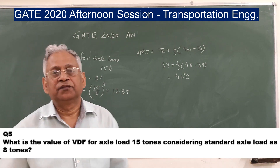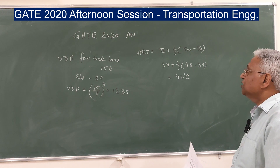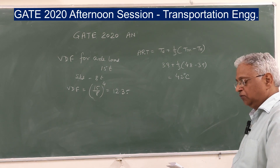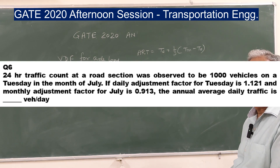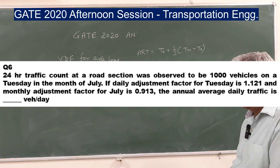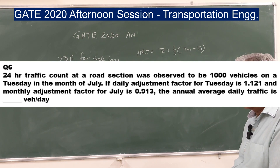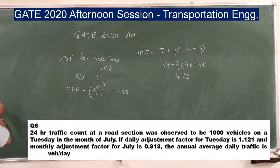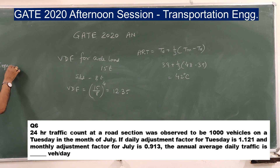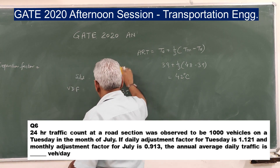The next question: a 24-hour traffic count at a road section was observed to be 1000 vehicles on a Tuesday in the month of July. The daily adjustment factor for Tuesday is 1.121 and the monthly adjustment factor for July is 0.913. Find the Annual Average Daily Traffic (AADT). This question is on traffic volume studies using the daily expansion factor.